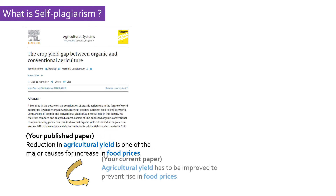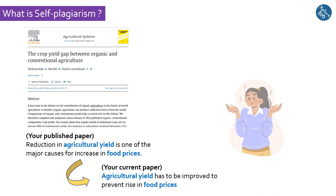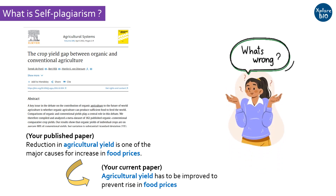Self-plagiarism is copying your own work previously published in a scientific journal. But you might think there is nothing wrong with copying the work you yourself have published earlier in some other journal. It sounds simple, but it is not.